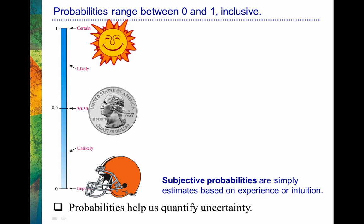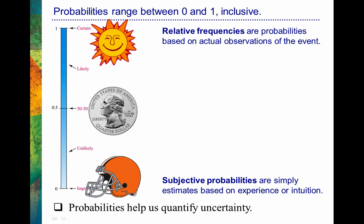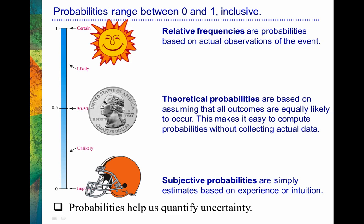Subjective probability involves no computations — it's really just opinion-based, an estimate. When we were talking about the sun coming up and looking back at past data, we're talking about relative frequencies. We can look back at past observations and figure out the probability of some event based on how it occurred over the long run. And when we were looking at that quarter flip, we're talking about a theoretical probability because we assume the outcomes — heads or tails — are equally likely.